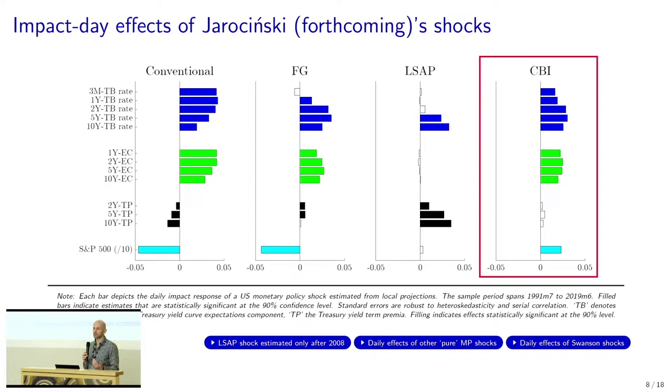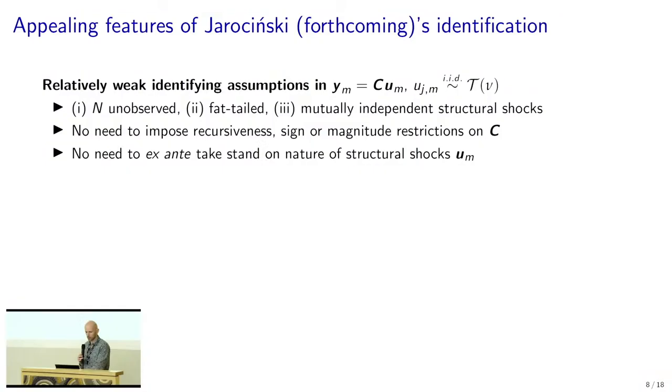The fourth shock lifts the treasury yield curve exclusively through the expectations component but raises equity prices. This is what the literature typically labels as a central bank information effect — there's a surprise tightening in monetary policy, but this is interpreted by financial markets as conveying that the Fed holds a more bullish view about where the economy is going, so financial markets upgrade their earnings expectations and equity prices go up. Let me emphasize again — this is an ex-post label. We're not invested in the interpretation of a central bank information effect in this paper.